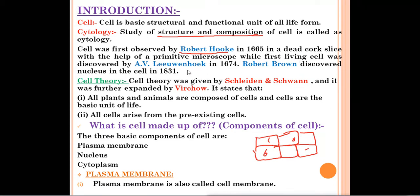The first living cell was discovered by Leeuwenhoek in 1674. Next, Robert Brown was a scientist who discovered the nucleus in the cell in 1831. The nucleus is a very important component of the cell which carries out a very vital function inside the cell.